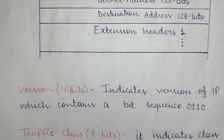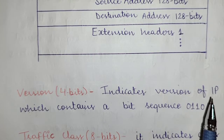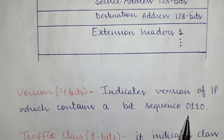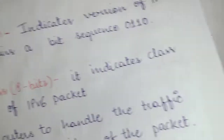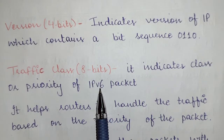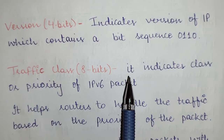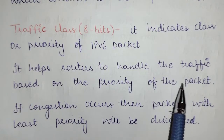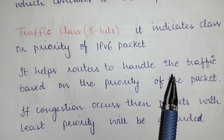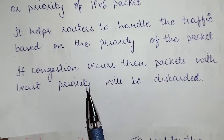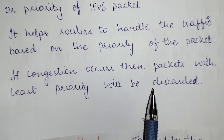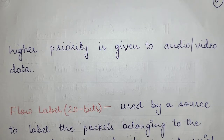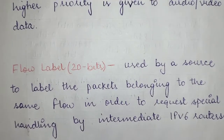The version field is 4 bits and indicates the version is 6, containing the bit sequence 0110. The traffic class field is 8 bits and indicates the class or priority of the IPv6 packet, helping routers handle traffic based on priority. If congestion occurs, packets with the least priority are discarded while those with the highest priority — usually audio and video data — are kept.